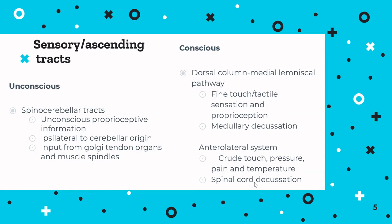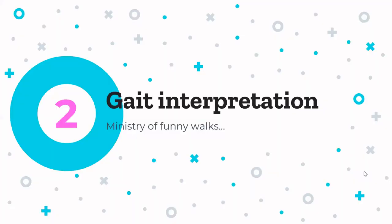It's worth remembering these tracts if you get questions asking where lesions are in the spinal cord. If you can pin down which tract is where and what a lesion in that part of the spine would look like, you can work it out. These are in the handout and on the slides, included to give a complete picture.